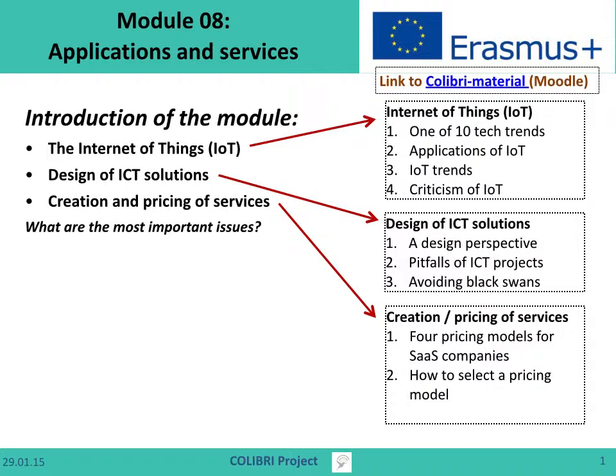Included in both the Internet of Things and the design process is the creation and pricing of services. In order to pay for the development and pay for the gadget, we have to have a price and a pricing model that is working. We look into the different price models in general and how to select them, going more specifically into service-as-a-system companies and looking at four price models for those.